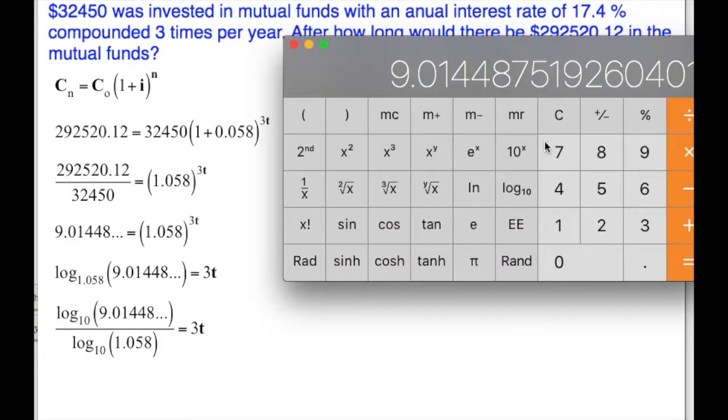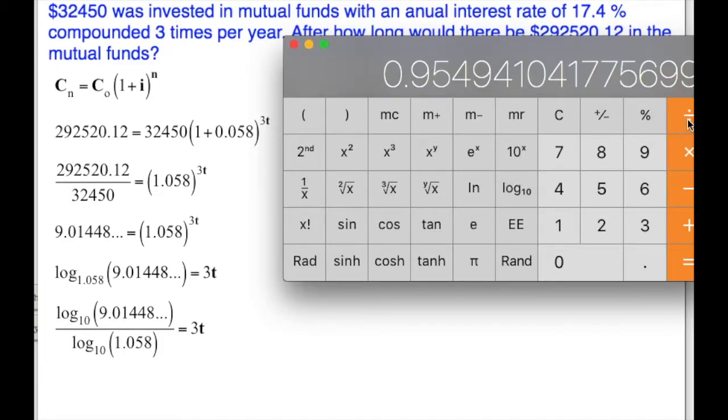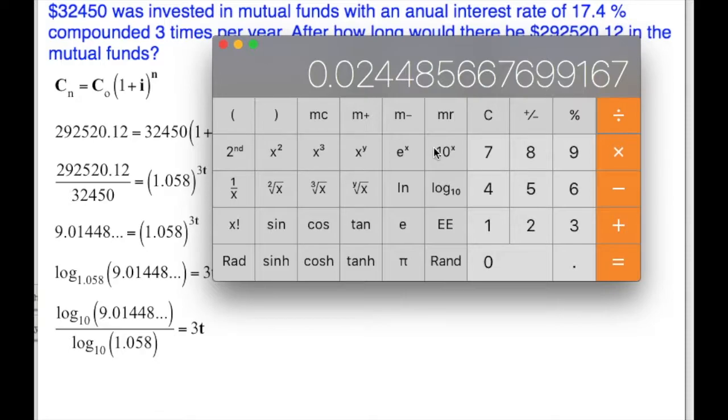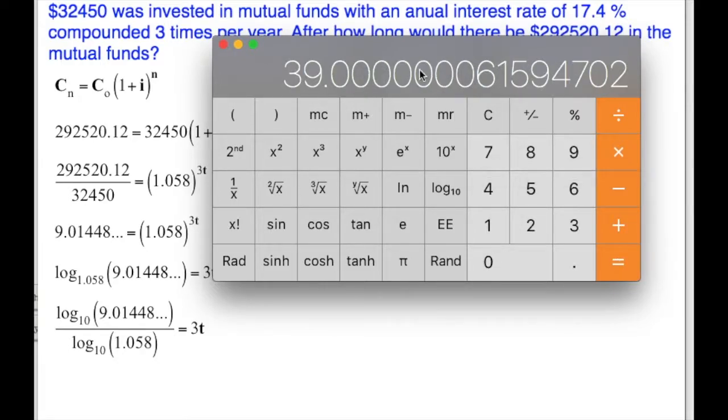Take that number, take the log of it, base 10, divided by the log of my 1.058. On my calculator, I have to press the number in first and then log. Some calculators have to press log first and then the number. Is equal to 39.